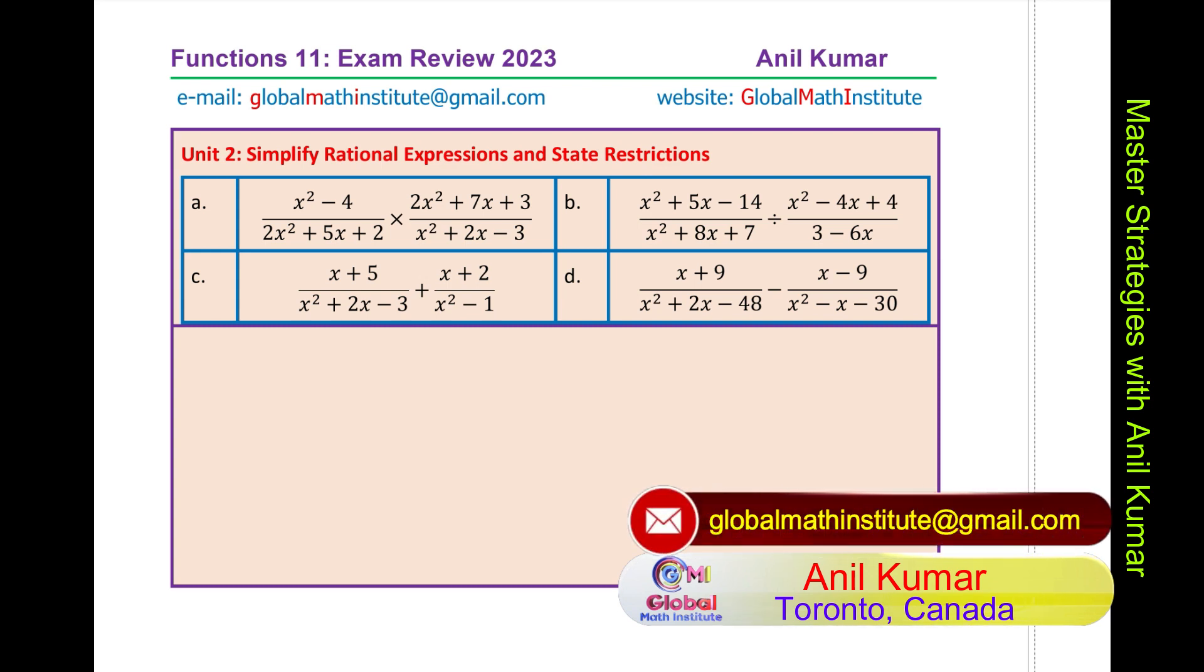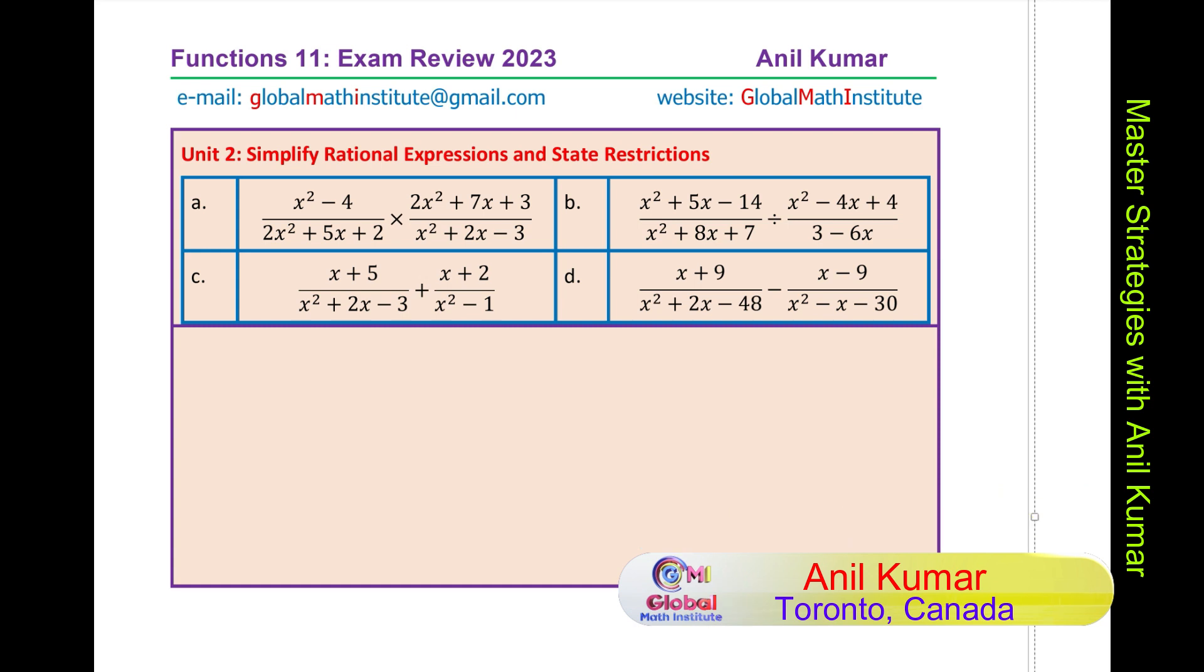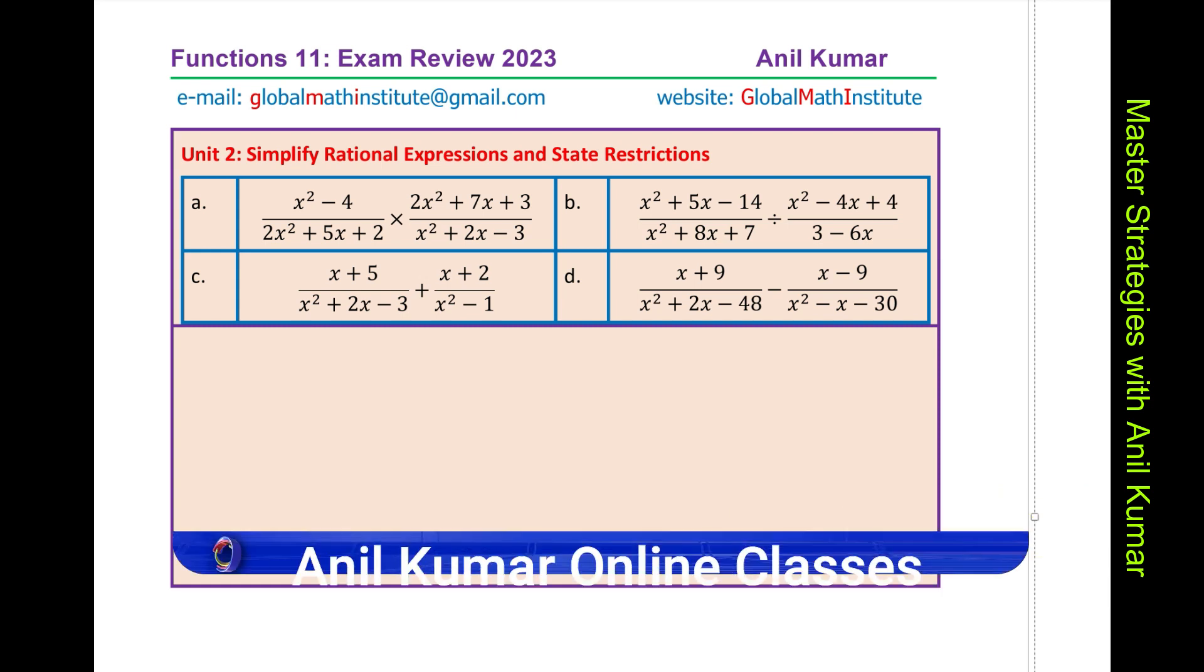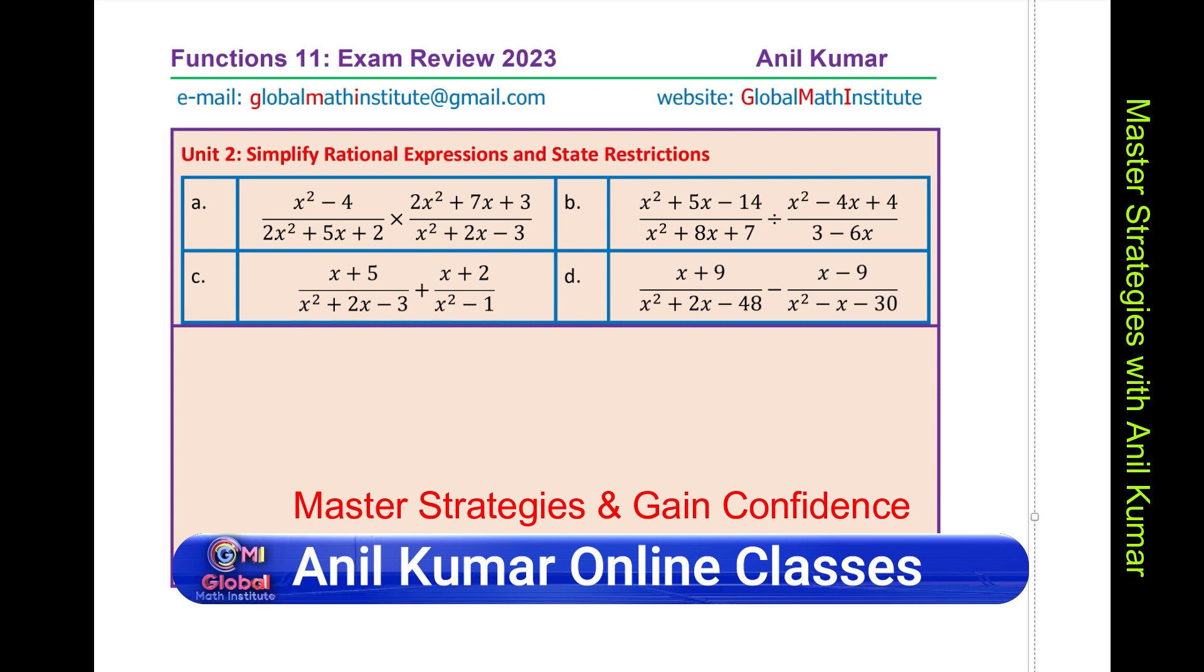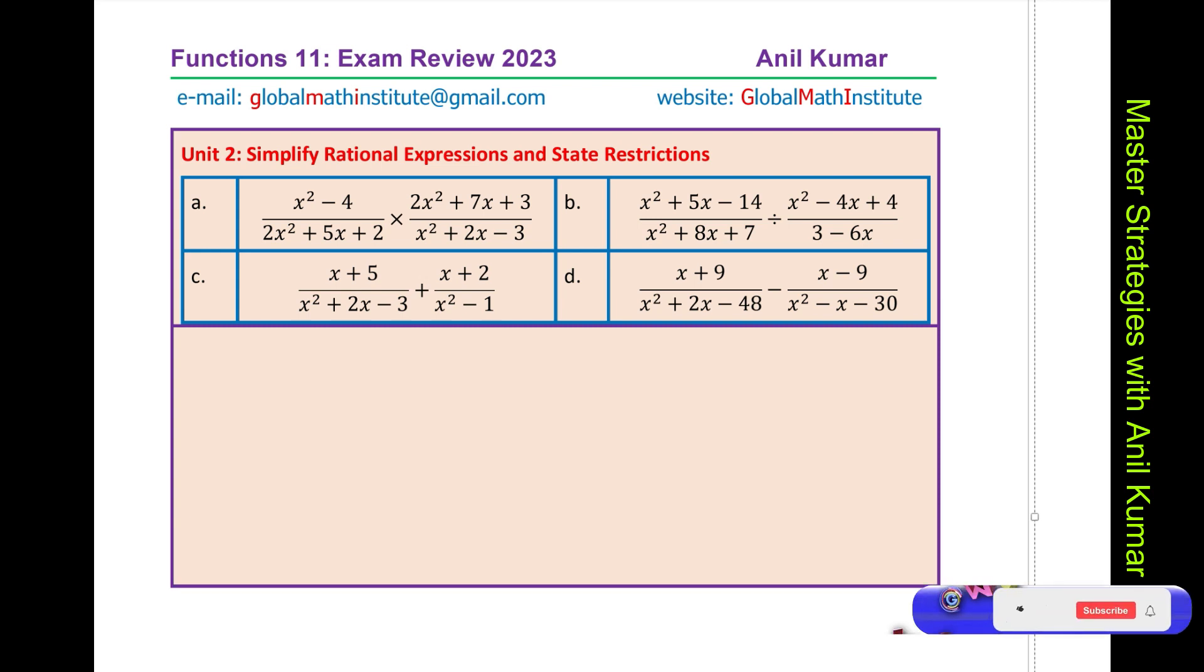When you are multiplying two rational expressions, then the denominators should not be zero. But, when you divide, in that case, the divisor you have to look into carefully. Both numerator and denominator of the divisor should be considered for restrictions. Division is reciprocal of multiplication. And then, two examples just to add and subtract the rational expressions. Take common denominator, simplify and get your answer.